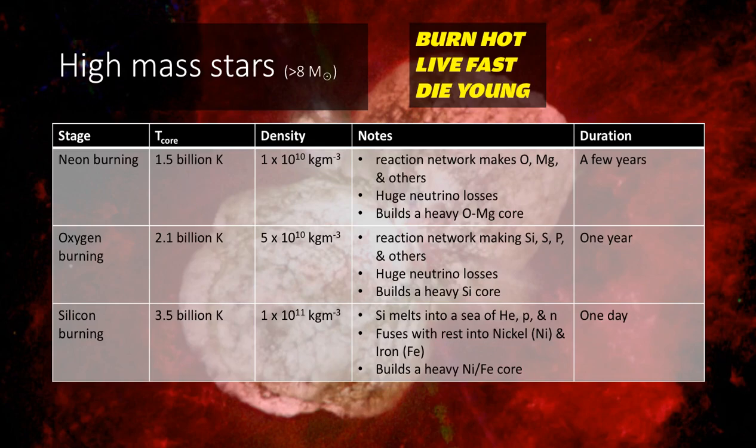Oxygen burns at a core temperature of 2.1 billion Kelvin, making silicon, sulfur, phosphorus, builds a heavy silicon core. That silicon core melts into a sea of helium, protons, and neutrons in a process that takes as little as one year before we start silicon burning.